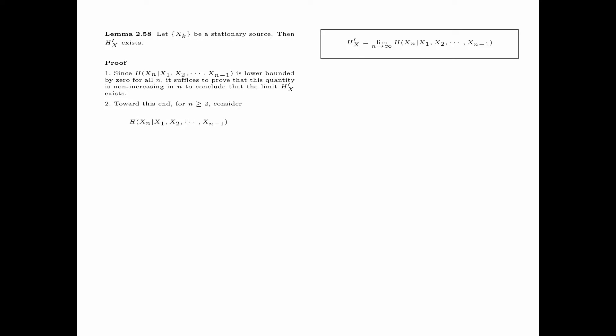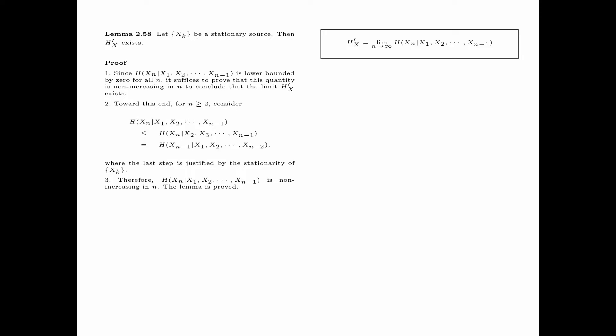For n greater than or equal to 2, consider the entropy of xn given x1, x2, up to xn minus 1. By removing the random variable x1 from the conditioning, we obtain an upper bound because conditioning cannot increase entropy. In the next step, we downshift all time indices by 1: n becomes n minus 1, 2 becomes 1, 3 becomes 2, and n minus 1 becomes n minus 2. By doing so, we do not change the value of the conditional entropy because the information source x sub k is stationary. Therefore, the entropy of xn given x1, x2, up to xn minus 1 is non-increasing in n, and so the limit exists as n tends to infinity, which by definition is equal to H sub x prime. The lemma is proved.